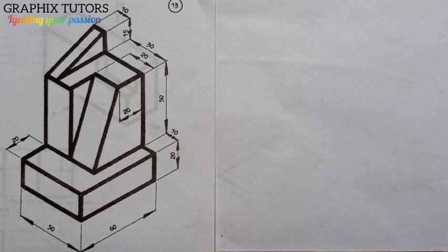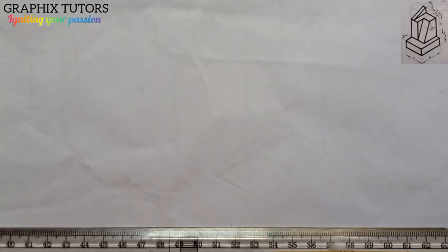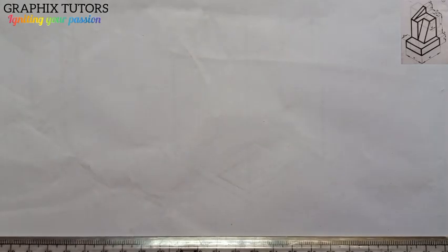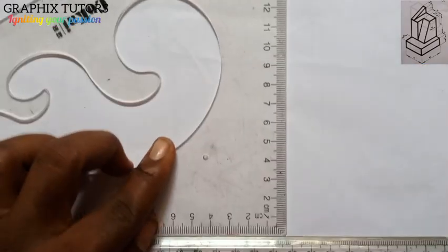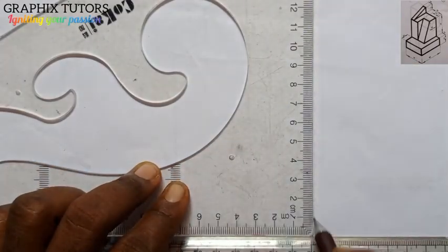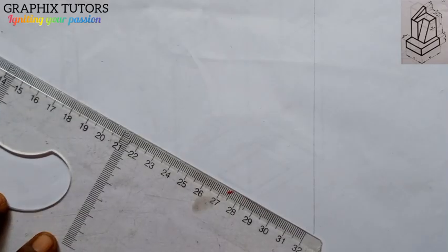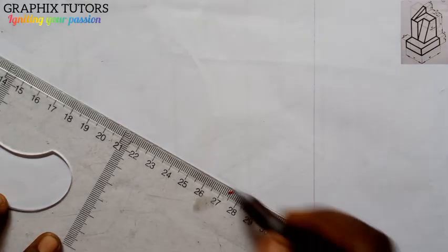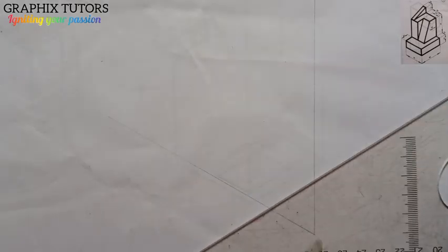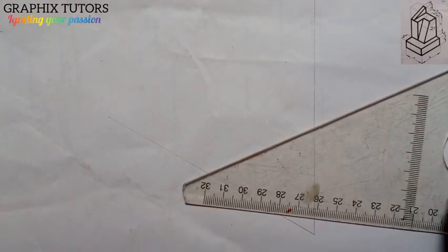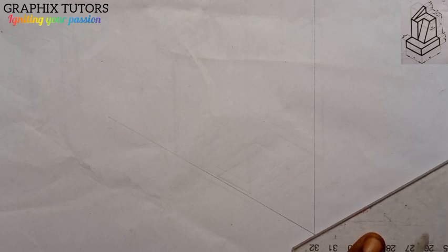Good everyone, my name is Graphics. Today we want to draw this figure in isometric projection. The first thing you do when you hear the word isometric is to draw your isometric axis. Pick up your set square and draw your vertical line this way, then draw the horizontal line — this is the Z axis — and also the X axis.